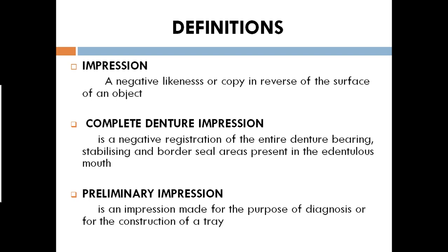Coming to the preliminary impression: this is an impression made for the purpose of diagnosis and construction of a custom tray. Once you make the impression and obtain a primary cast, that cast is used for diagnosis. If anything was missed in your case history or examination, you can evaluate the primary cast to check. For example, if there is deep bilateral undercutting, you cannot proceed unless you perform alveoloplasty or ridge correction. Construction of the tray follows: the preliminary impression is made using a stock tray, while the secondary impression uses a custom or special tray made on the primary cast.